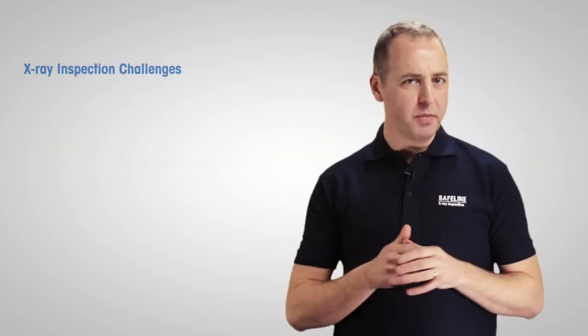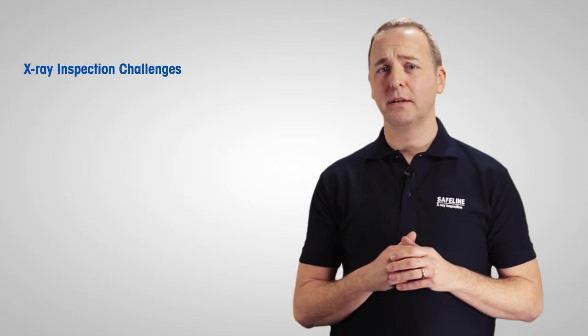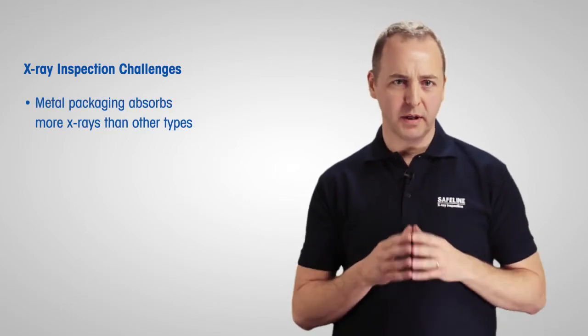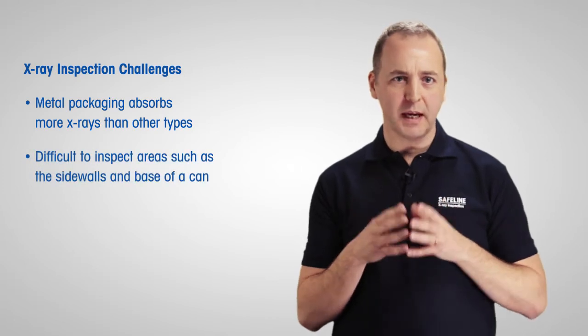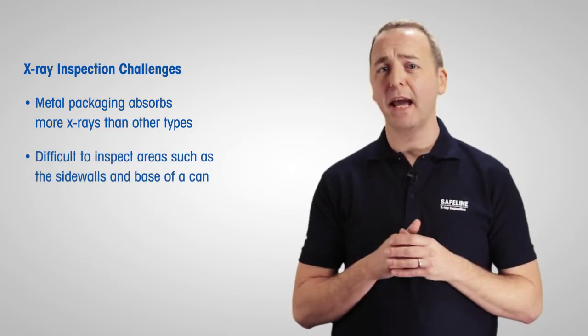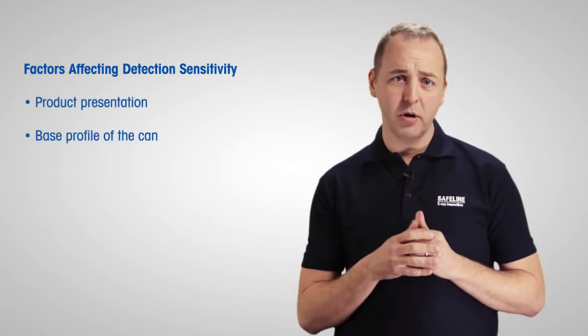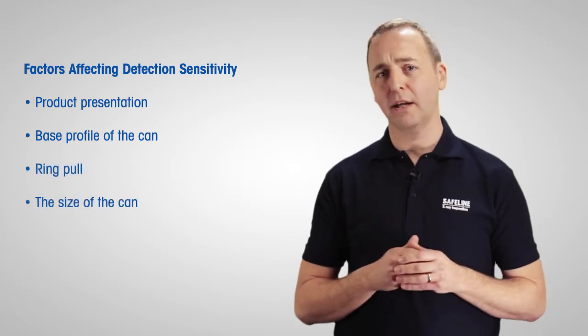X-ray inspection of metal cans does present some challenges. For example, metal packaging absorbs more X-rays than other types, and the ribbed sidewalls and tiered base of a can may create difficult-to-inspect areas. There are also a number of factors which can affect detection sensitivity, such as the product's presentation, how it's distributed inside the can, the base profile of the can, the ring pool and the size of the can.